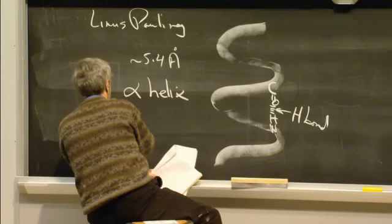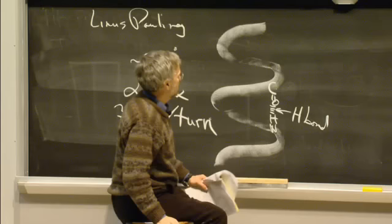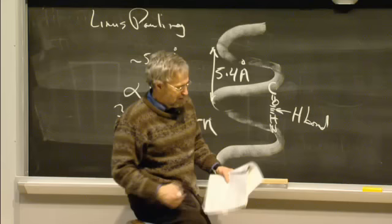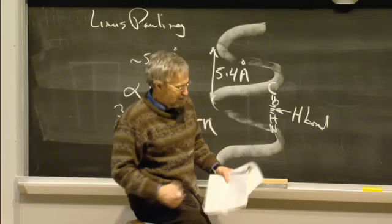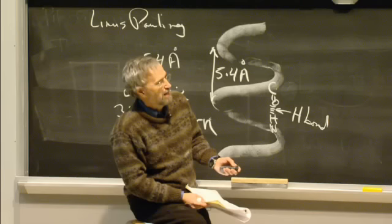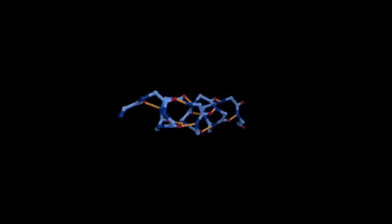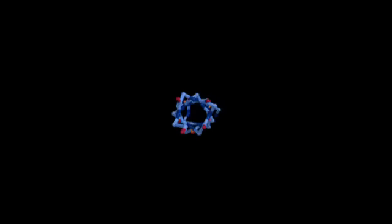The alpha helix has 3.7 amino acids per turn, and the distance per turn is 5.4 angstroms. Here is just the backbone of an alpha helix. The orange-yellow colored bonds are the hydrogen bonds — you can see how the spiral goes and look right down the hole down the middle of the helix.